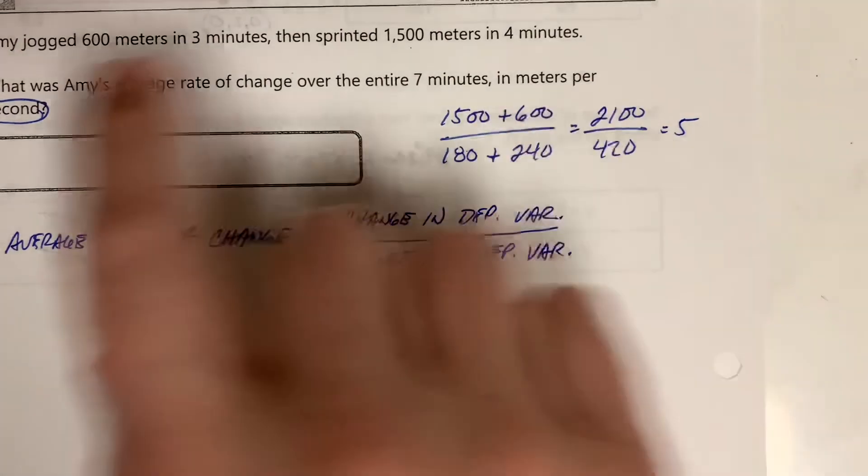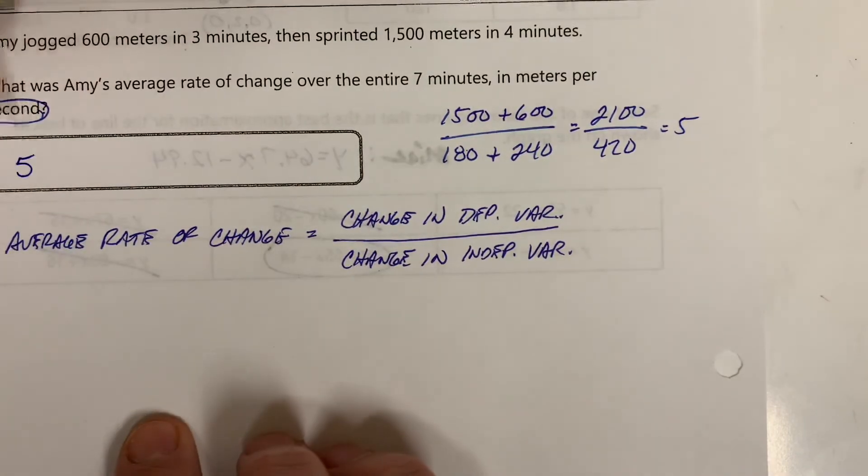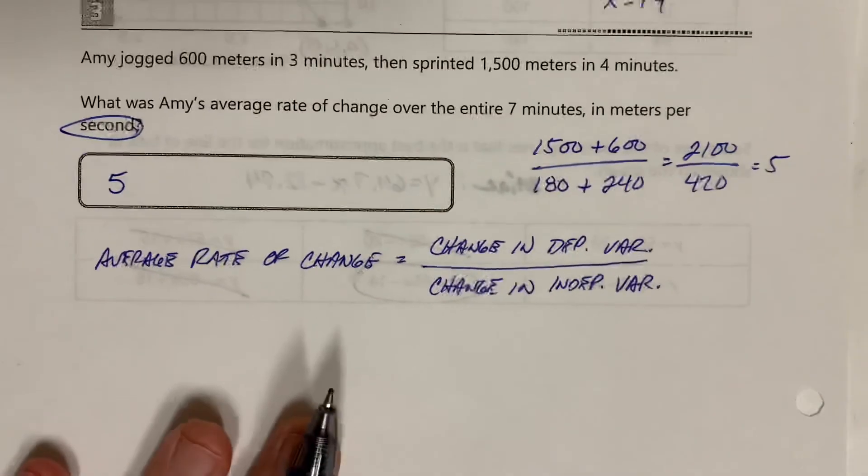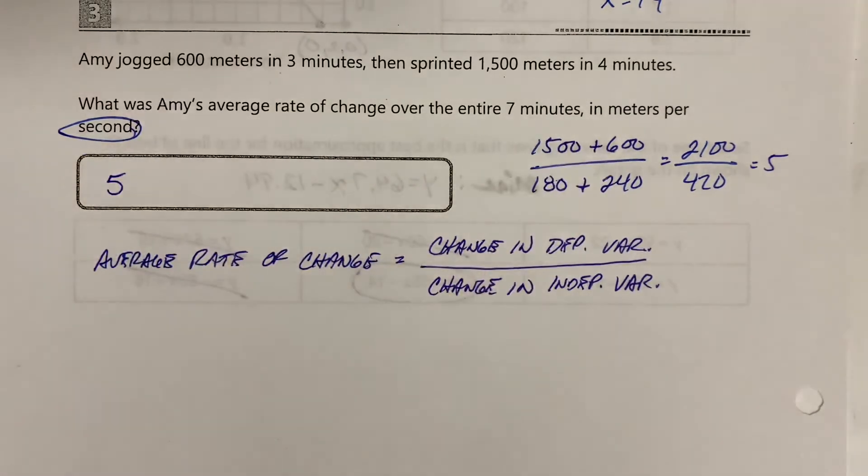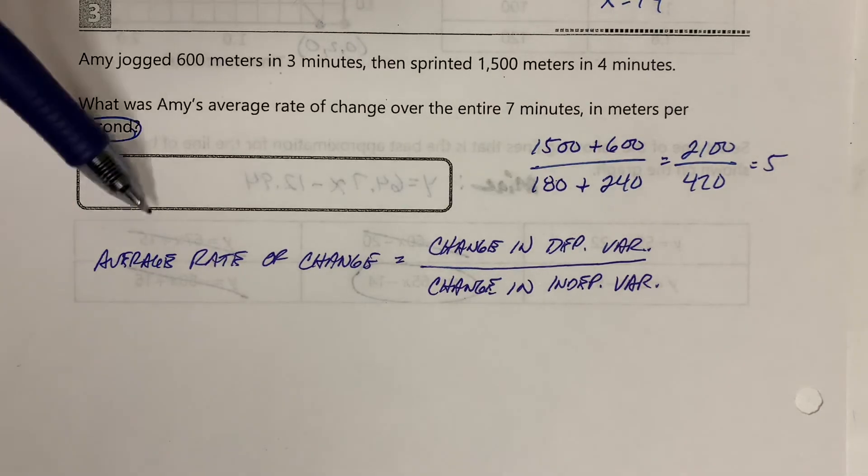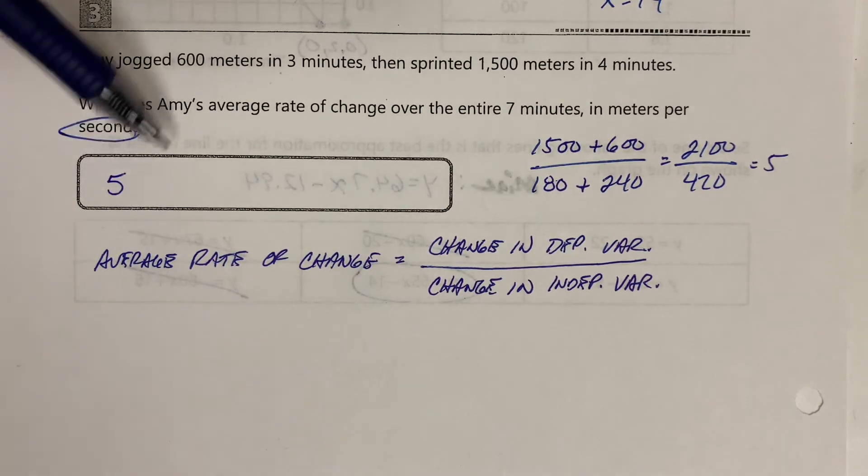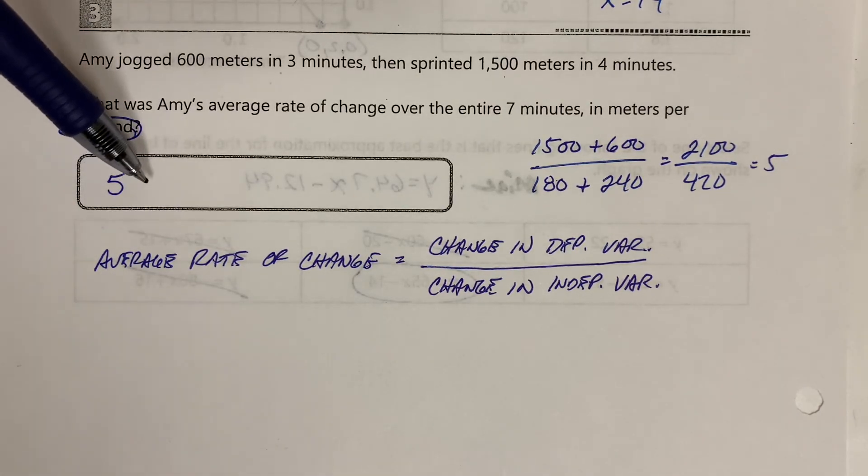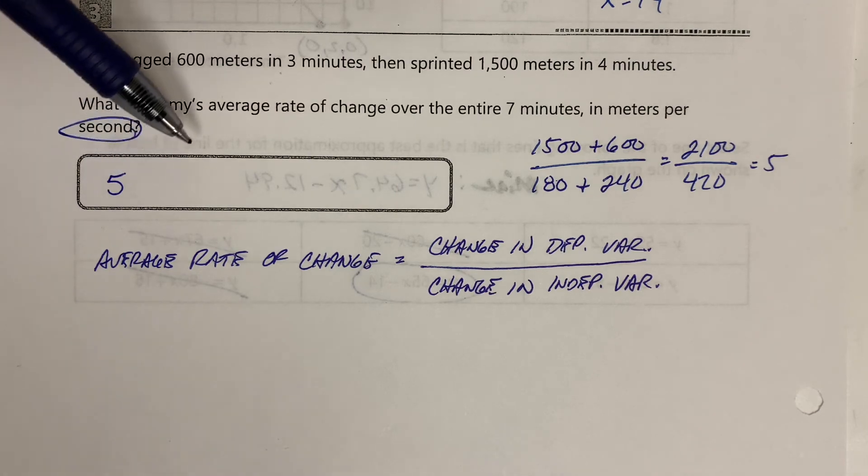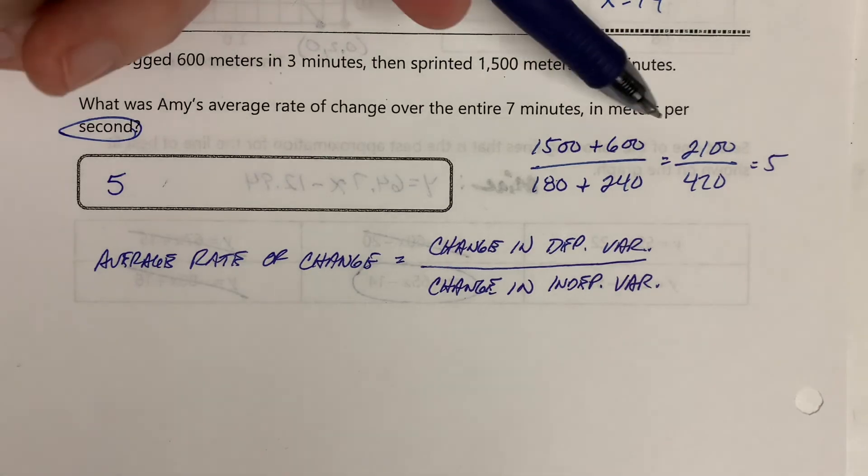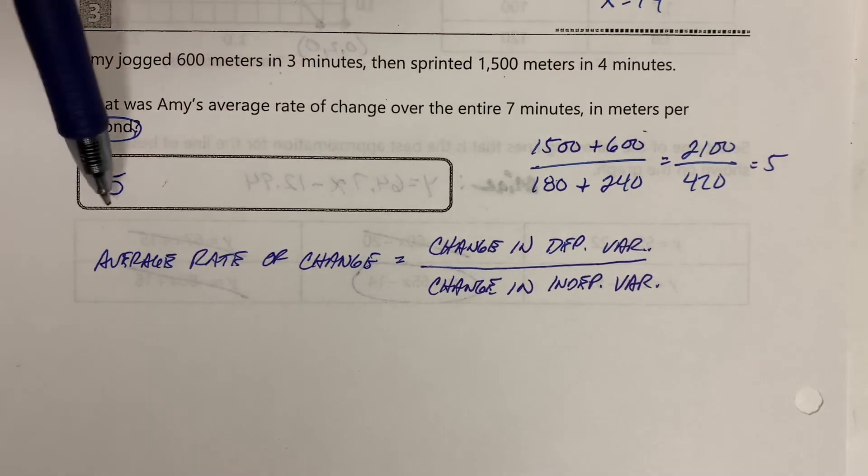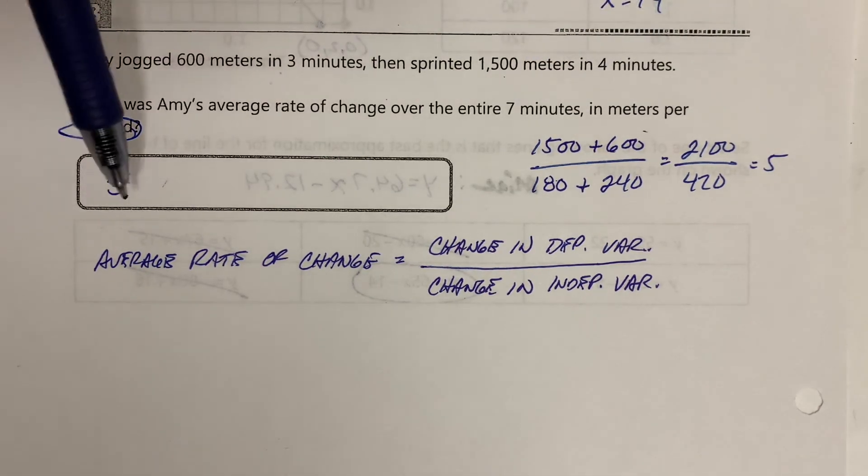Now, again, on the EOC you don't have to put 5 meters per second here because it already tells you what the units are going to be that you're writing. So you don't have to rewrite the units here. Don't write MPS or definitely not MPH because it's not miles per hour. You're just going to have to just write the number because they already tell you what the units they want this answer to be in.